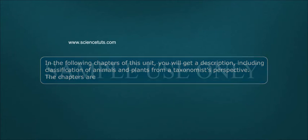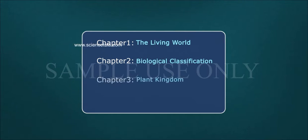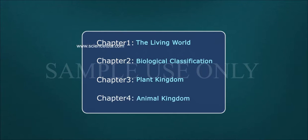The chapters are: Chapter 1 - The Living World, Chapter 2 - Biological Classification, Chapter 3 - Plant Kingdom, Chapter 4 - Animal Kingdom.